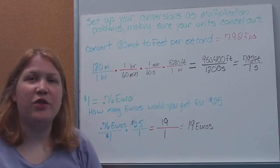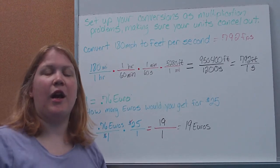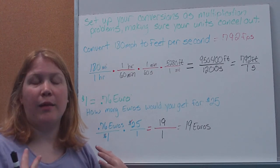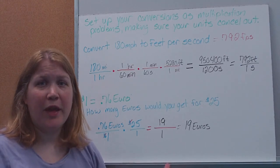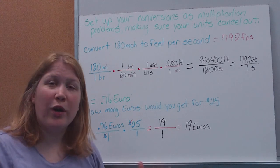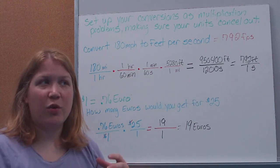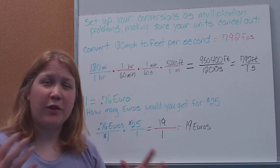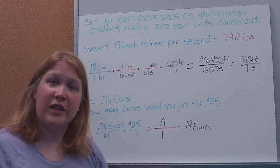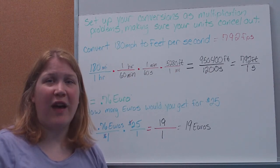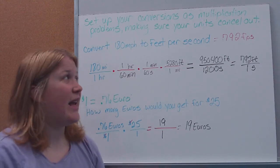Here's how we do dimensional analysis. We basically set it up like one long, giant run-on fraction multiplication problem. This is nice and easy because you know where to put everything. When we did it the other way, I told you to think smaller to bigger and then multiply or divide — well, this way it sets it all out for you, and you can clearly see where you need to multiply or divide. You just want to set it up so that your units cancel out.